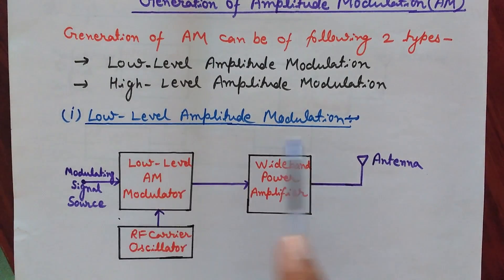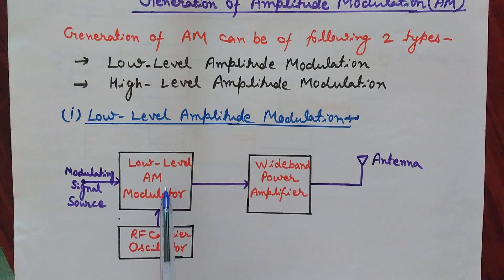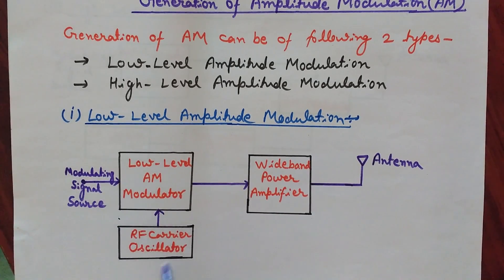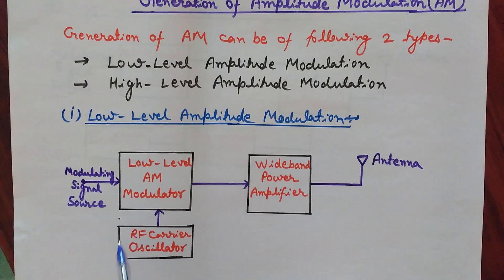Here is the block diagram of low-level amplitude modulation. We have a low-level AM modulator with two inputs: at its first input we apply the modulating signal source, and at the second we apply the carrier wave, which is generated by the RF carrier oscillator.